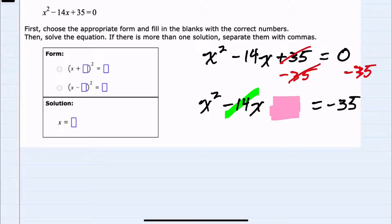To make this a perfect square, I would want to take half of 14 and square it. Since half of 14 is 7, 7 squared gives us 49. For the left-hand side to be a perfect square, this should be plus 49.